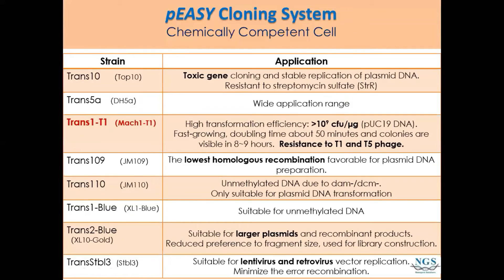Now I will talk about the competent cell that comes together with the PEZ cloning system: TRANS1-T1. Besides being resistant to T1 and T5 phage, it also has high transformation efficiency of more than 10⁹ CFU per microgram of pUC19 DNA, and it is fast-growing. The doubling time is only about 50 minutes, and colonies are visible in 8 to 9 hours — meaning the next morning you can see your clones. We also have different types of competent cell strains for different applications.